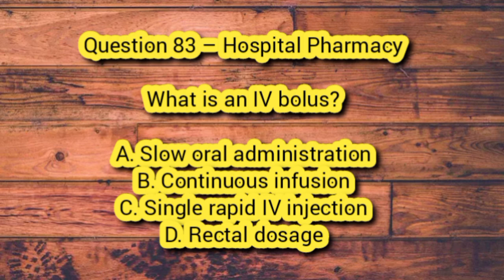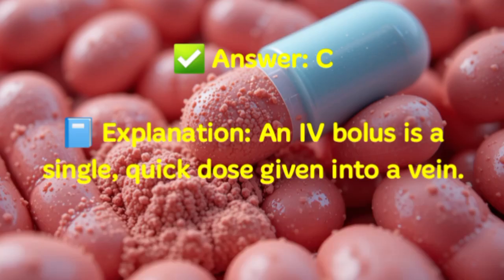Question 83 – Hospital Pharmacy. What is an IV bolus? A. Slow oral administration. B. Continuous infusion. C. Single rapid IV injection. D. Rectal dosage. Answer: C. Explanation: An IV bolus is a single, quick dose given into a vein.